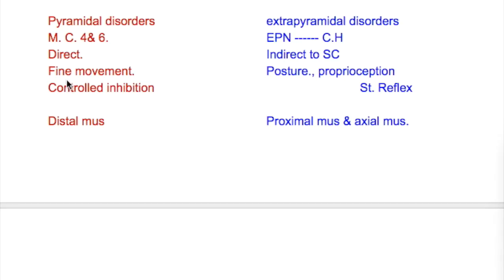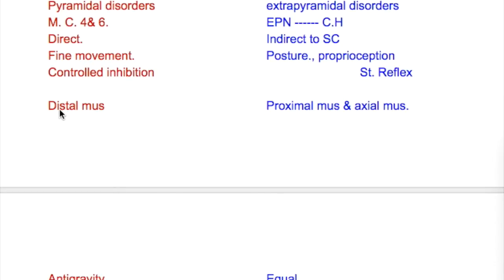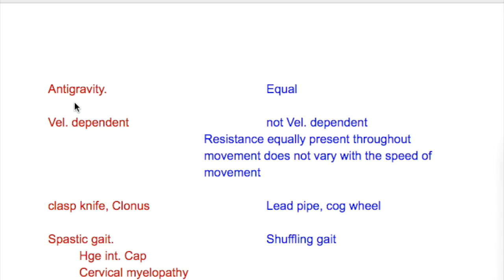The pyramidal tract controls fine movement and causes controlled inhibition of movements. The function of the extrapyramidal system is maintaining posture, proprioception, and stretch reflexes.